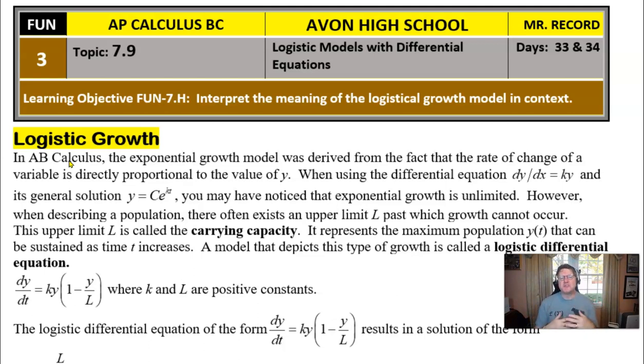You may have known that exponential growth is unlimited, we call that an uninhibited differential equation. However, when you describe a population, there's often going to exist some upper limit past which that growth can't occur. It's a lot more realistic if you have a population of rabbits in an area, they can only grow to be so large because they're going to compete for the resources and the general space. The upper limit L we call the carrying capacity, some of you that have taken AP Biology may be somewhat familiar with that phrase.